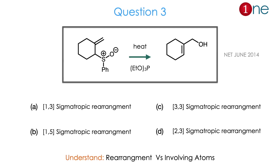Question number 3. They give cyclohexene with an alkene, and a sulfur attached with oxygen and phenyl — sulfur and oxygen form a type of ylide. You heat it up with phosphorus, and the side product is an alcohol with an alkene. They ask what really happened to the mechanism. It is a sigmatropic rearrangement — whether 1,3 or 3,3 or 1,5 or 2,3 rearrangement. From the reactant to product, the question is about rearrangement versus the atoms involved. The answer is D.